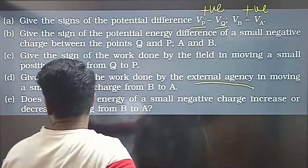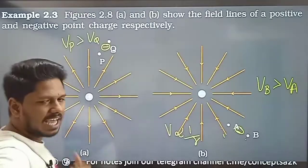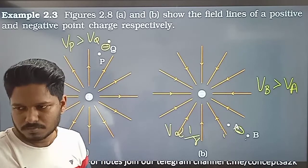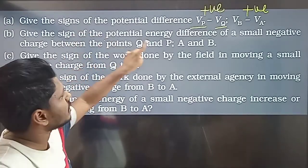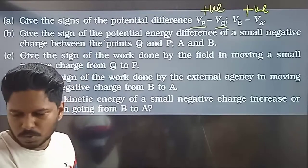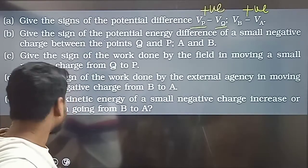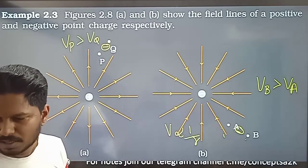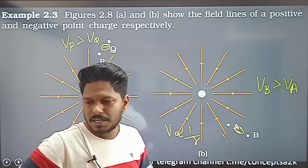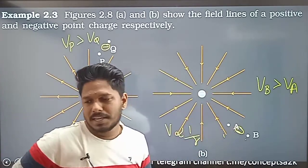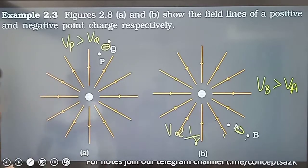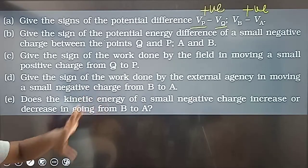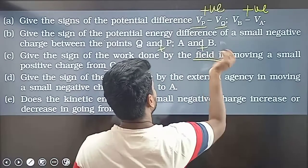For sub-division 2: work done by the field — if you move a small positive charge from Q to P, and the field is doing work, then the work done by the field is positive. Let's check: Q to P, if the field does positive work, it is confirmed positive.